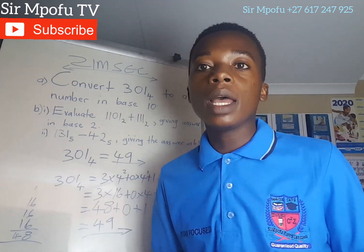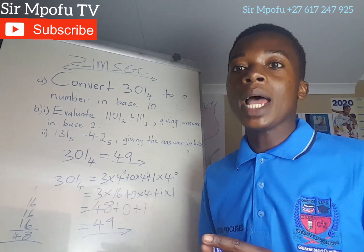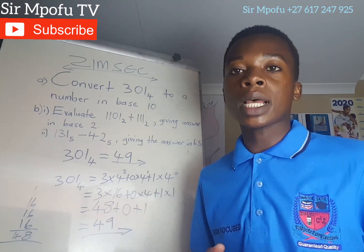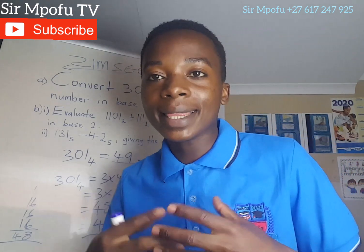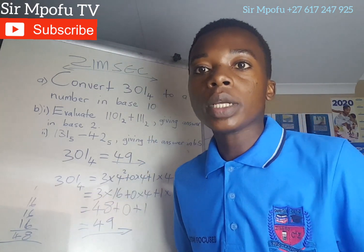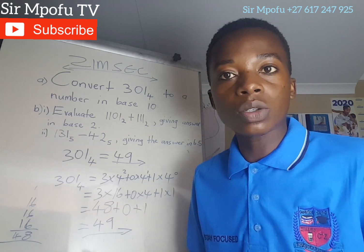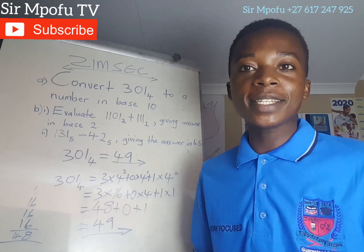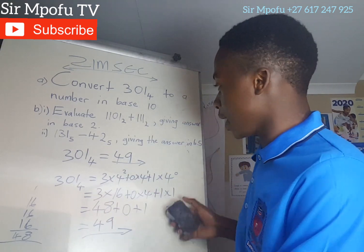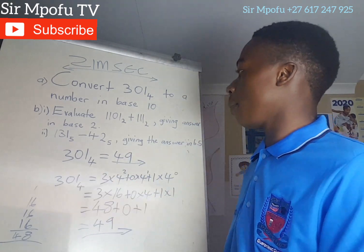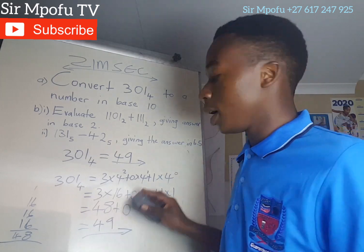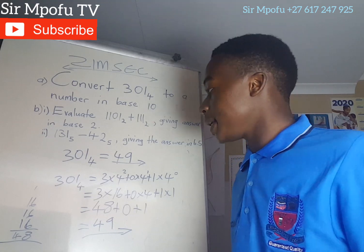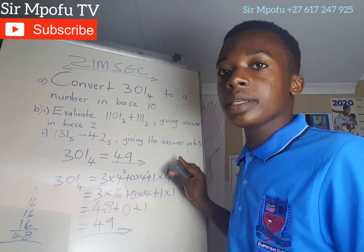So you see, we used two different methods but we still get the correct answer — the same answer. As I always say, there are so many ways to solve it, but there's always the easiest, simplest, and fastest. If you prefer the old ways, it's fine — you still get the same answer.